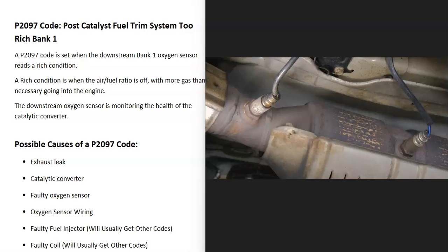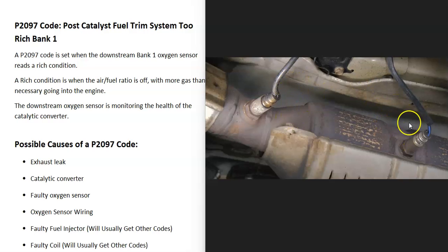There are sensors located on the exhaust and they do two things. First, they monitor how much oxygen was burnt off during combustion, and the computer uses this information to adjust the air-fuel ratio mixture going into the cylinders. Second, they monitor the catalytic converter. Sensor one is located before the catalytic converter and is called the upstream oxygen sensor, and sensor two is located after the catalytic converter and is called the downstream oxygen sensor.